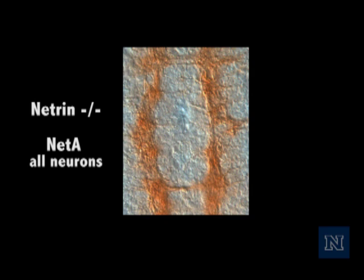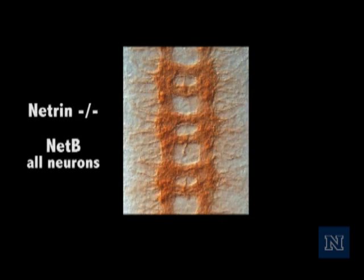Now when I express netrin A in all neurons, which gives a level playing field where a netrin can no longer guide to the midline, we get the expected result of further confusing the neurons. Now when I express netrin B in all neurons, instead of an increase in errors, I got a rescue.